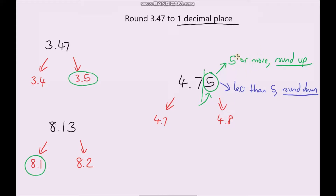In this situation the number after the line is 5, so we would round it up. If it's 5, 6, 7, 8 or 9 we round up, whereas if it's less than 5 — so 1, 2, 3 or 4 — we round down. So we're rounding it up, and this answer is going to be 4.8.